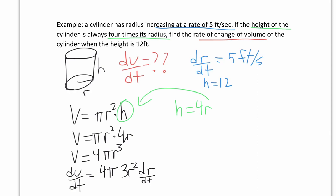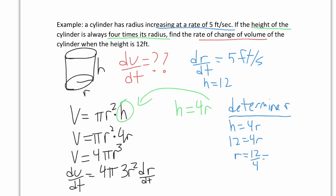We need dV/dt, but we don't have r. So we need to determine r on the side. They gave us h = 12, and we need r in our formula. Since h = 4r, we have 12 = 4r, so r = 12/4 = 3.